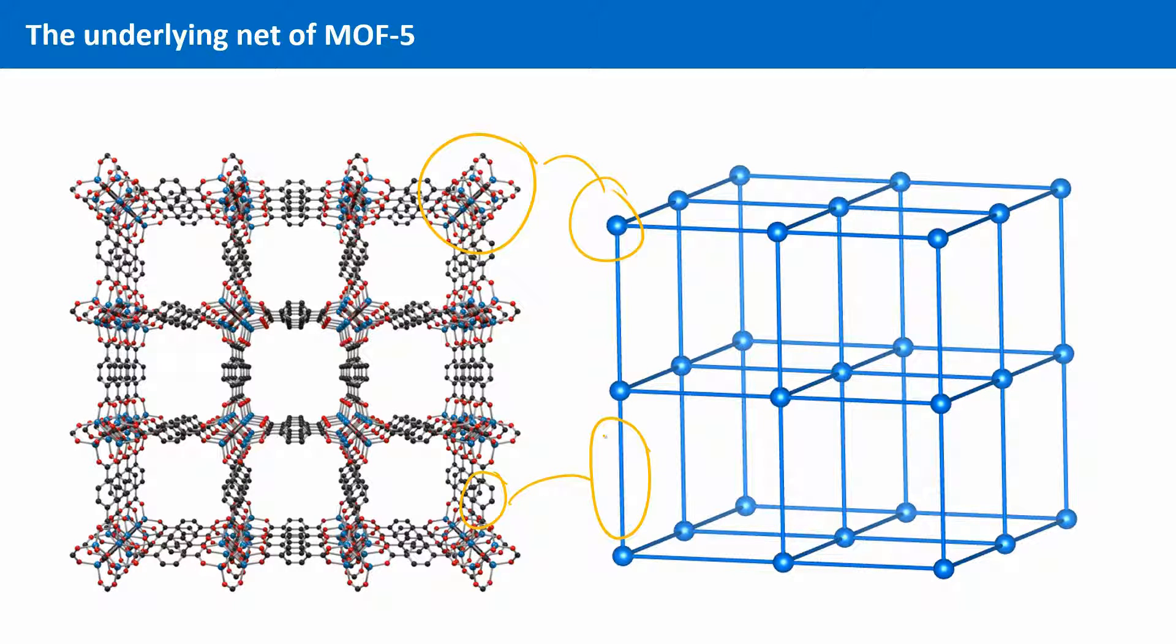This now somewhat looks like a cubic primitive Bravais lattice. But why would we actually want to reduce the structures as far as presented here?